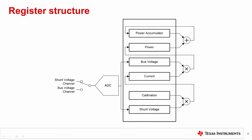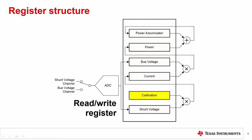Let's take a closer look at the register structure of the digital power monitors. The shunt voltage, bus voltage, current, and power registers are all read-only registers, while a calibration register is a read/write register. There is no programming needed if you only require shunt and bus voltage measurements and do not need direct current and power readouts.